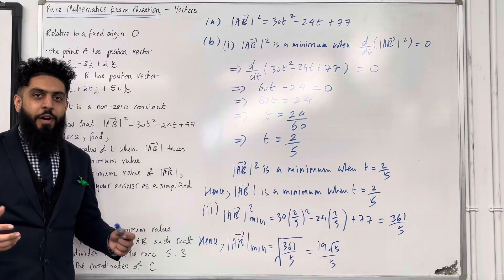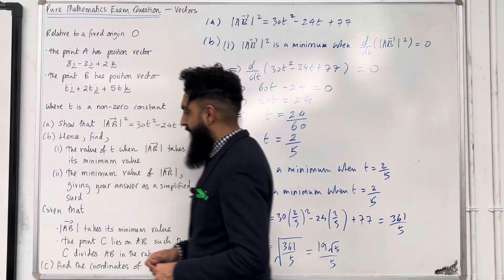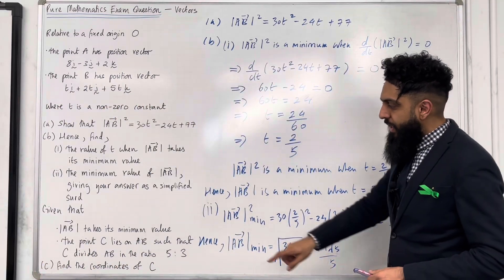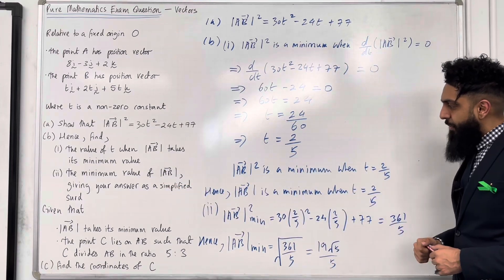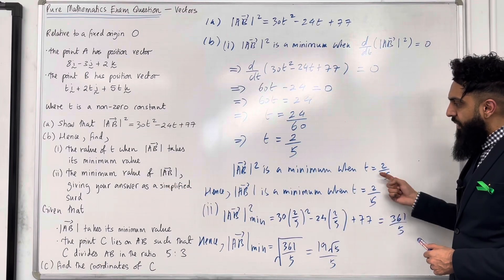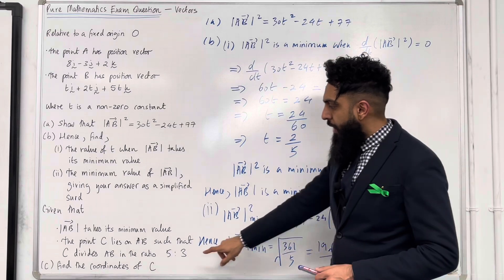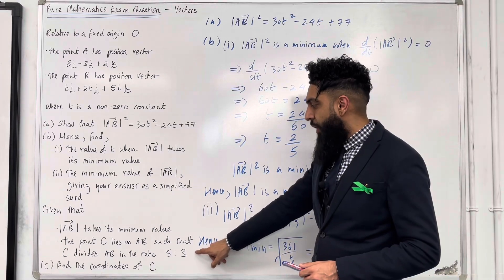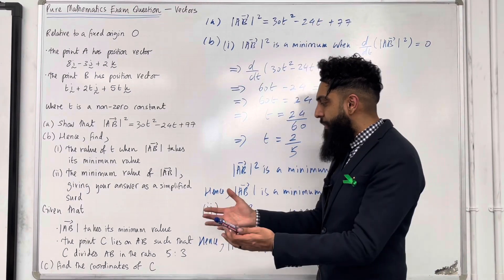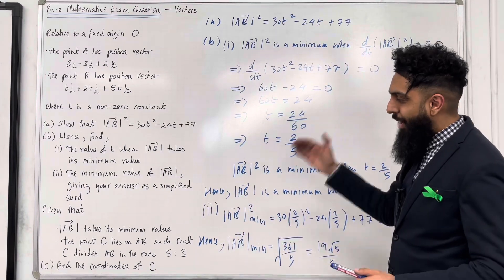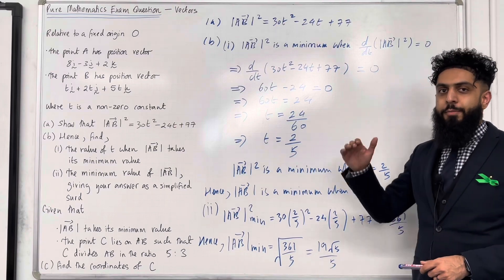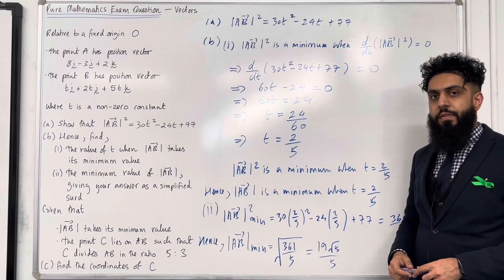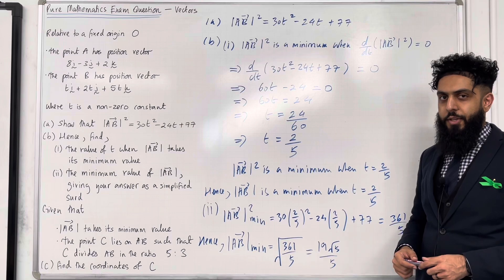Moving on to part C of the question. Given that: first bullet point, the magnitude of AB takes its minimum value (so t equals 2 over 5); second bullet point, the point C lies on AB such that C divides AB in the ratio 5 to 3. Part C: find the coordinates of C. Please pause the video, have a go at part C, and once you've got your complete solution, then play the video.